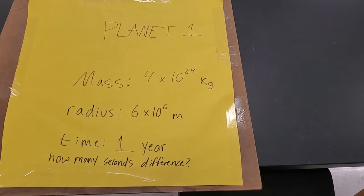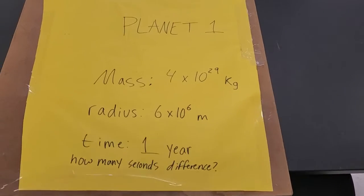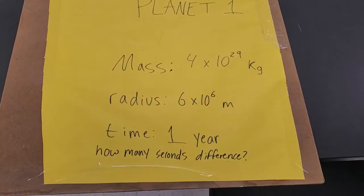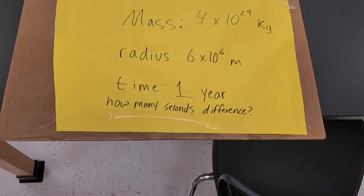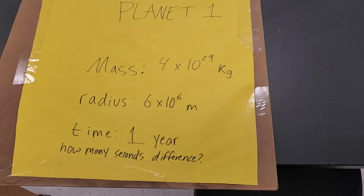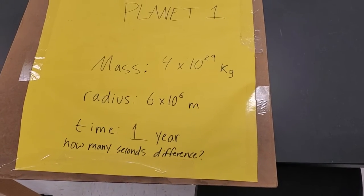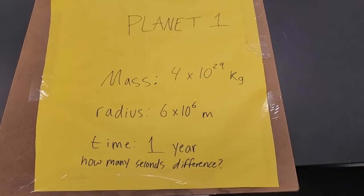Alright, planet 1 has a mass of 4 times 10 to the 29th kilograms, a radius of 6 times 10 to the 6 meters, and you spend a time of 1 year away from the planet. How many seconds different is it from the planet than where you observe? So what's the time spent in gravity? What's the difference in time?